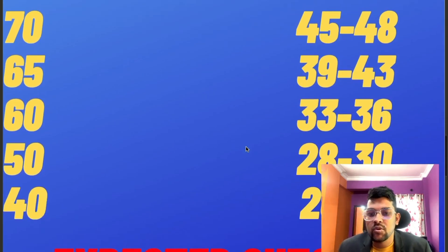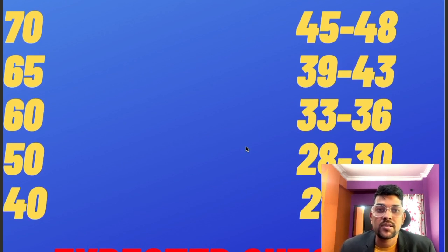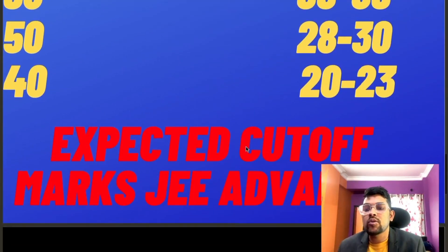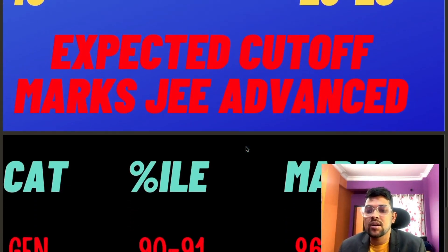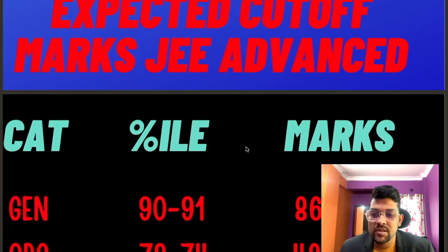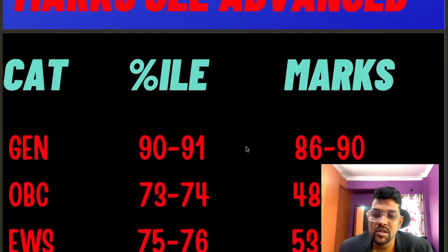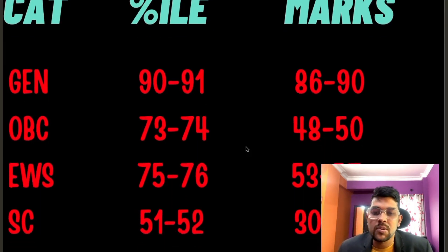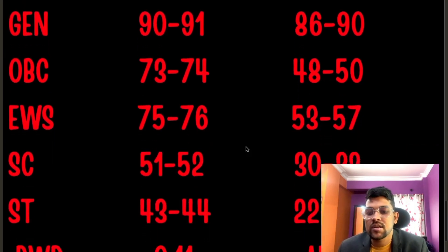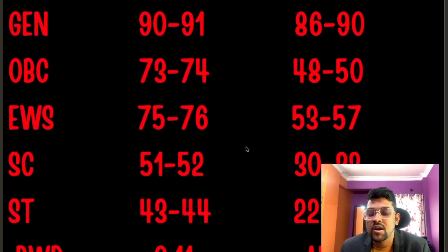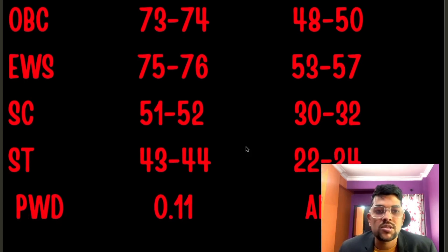For 60 percentile, 33 to 36 marks. For 50 percentile, 28 to 30. For 40 percentile, 20 to 23 marks is required. Now, for the expected cutoff marks for JEE Advanced, the percentile will remain 90 to 91, but marks will depend on the paper. For this session, 86 to 90 marks for General/OBC, 48 to 50 for EWS, and 53 to 57 marks.